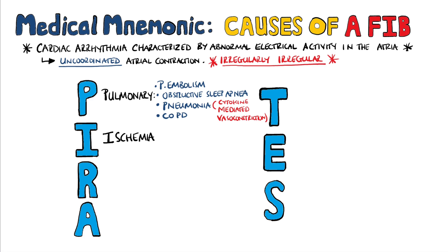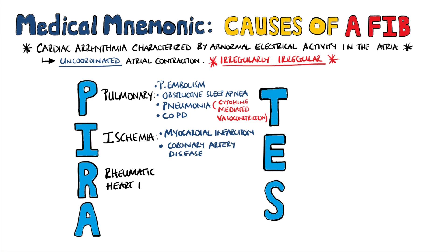I is for ischemia itself, seen in myocardial infarction or coronary artery disease. R is for rheumatic heart disease, but you should remember abnormal heart valves here, including mitral regurgitation and mitral stenosis.